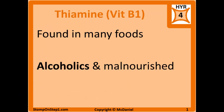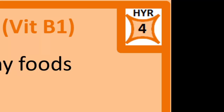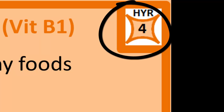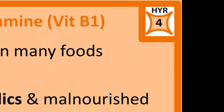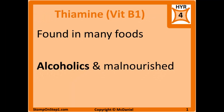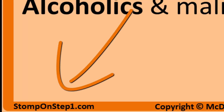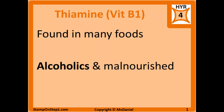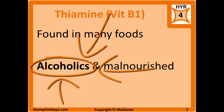We'll get started with Thiamine, which you can see here at the top right corner — I give it a high yield rating of 4. It's a rating scale from 0 to 10 that gives you a rough estimate for how important each topic is for the Step 1 exam. Thiamine is found in many foods and deficiencies are primarily seen in alcoholics and people who are malnourished. Any time you see alcoholism in a question stem and a vitamin question, your first thought should be Thiamine deficiency.